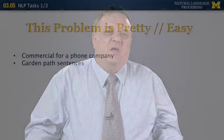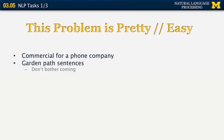Here are some examples of garden path sentences. 'Don't bother coming' versus 'don't bother coming early.' If you get interrupted after 'don't bother coming,' you will just not go to that place. But if you heard the full sentence — 'don't bother coming early' — that means you should still come, just come on time.